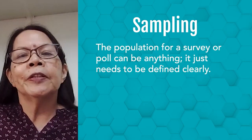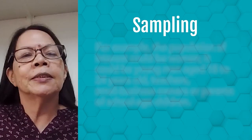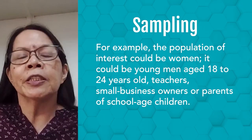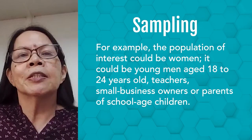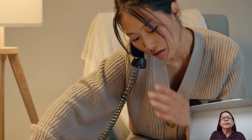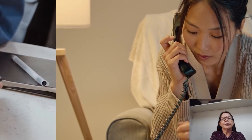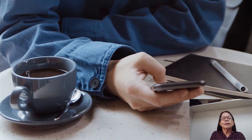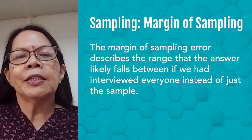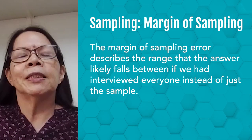The population for a survey or poll can be anything — it just needs to be clearly defined. For example, the population of interest could be women, or young men aged 18 to 24 years old, or teachers, or small business owners, or parents of school-aged children. Surveys can be done over the telephone, but the main disadvantage is that not everyone has a landline or even a cell phone, so some segments of the population will not have a chance of being included. The same is true of online surveys — not all Filipino adults have access to the internet. The margin of sampling error describes the range that the answer likely falls between if we had interviewed everyone instead of just a sample.